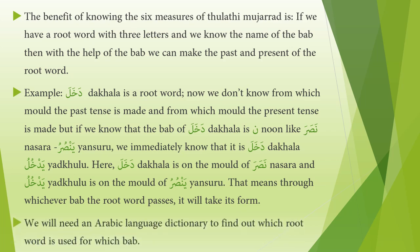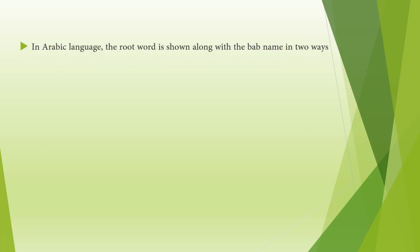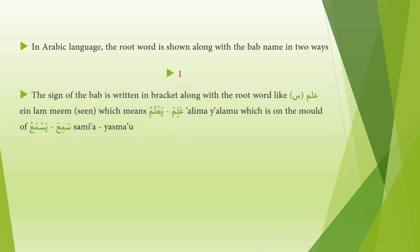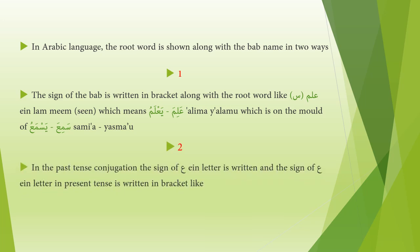We will need an Arabic language dictionary to find out which root word belongs to which bab. In Arabic language, the root word is shown along with the bab name in two ways. Number one: the sign of the bab is written in brackets along with the root word, like alima (sin), meaning alima/ya'alamu, which is on the mold of sami'a/yasma'u — bab seen. Number two: in the past tense conjugation, the sign of the 'ain letter is written, and the sign of the 'ain letter in the present tense is written in brackets — example: alima (zhabar), meaning alima/ya'alamu.